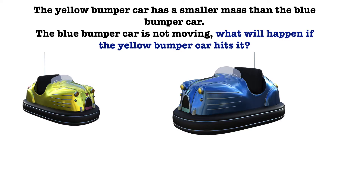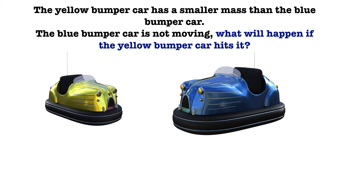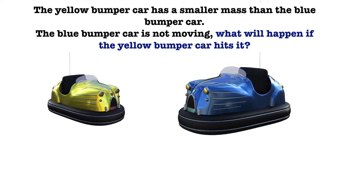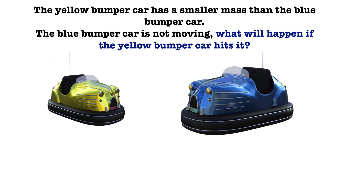Here, the yellow bumper car has a smaller mass than the blue bumper car. The blue bumper car is not moving. So what will happen if the yellow bumper car hits it? The yellow car's action force will cause the blue car to slowly move backwards due to its large mass. The blue car's reaction force will cause the yellow car to move in the opposite direction at a faster speed due to its smaller mass.